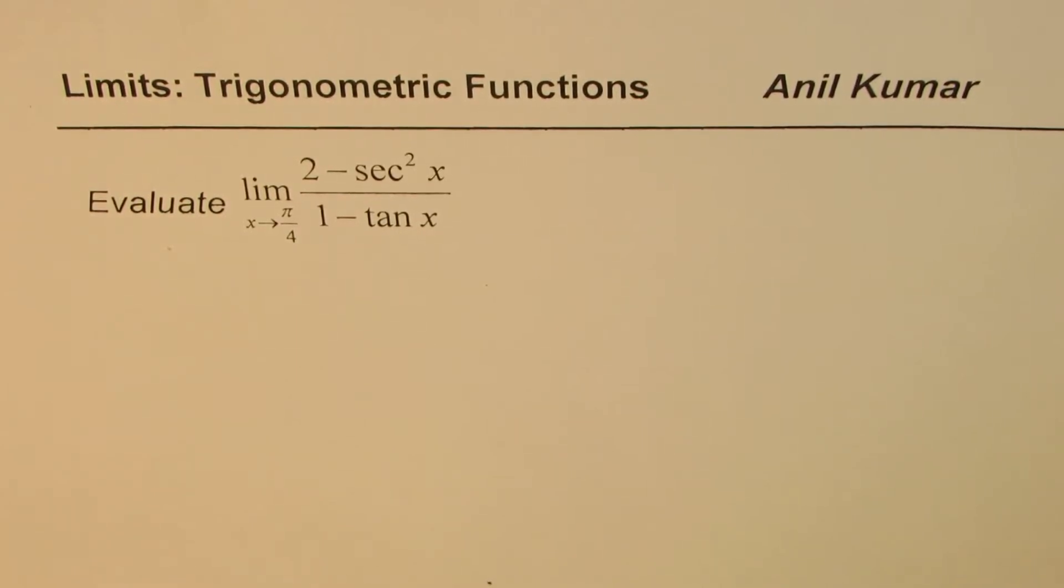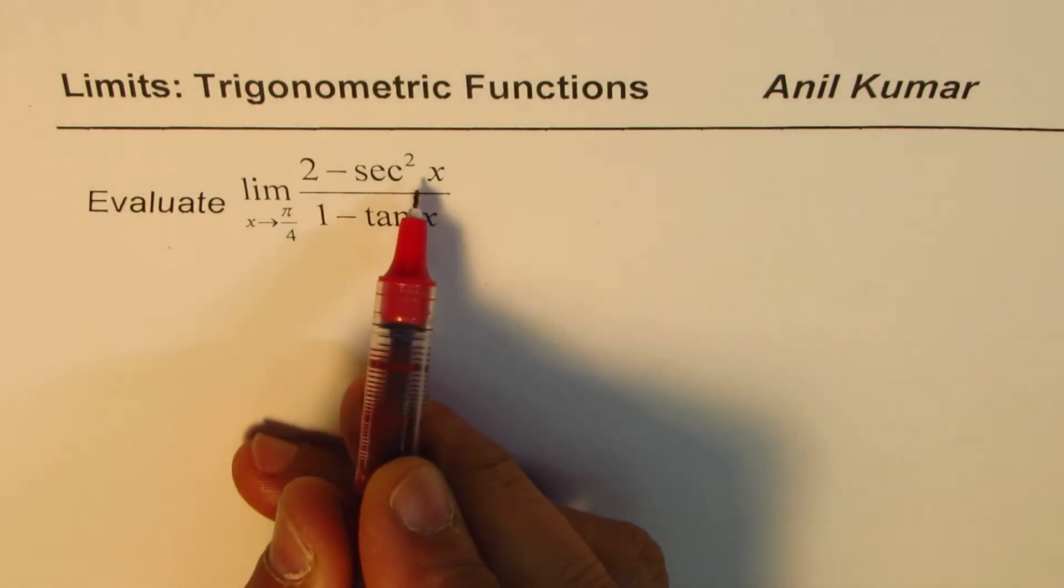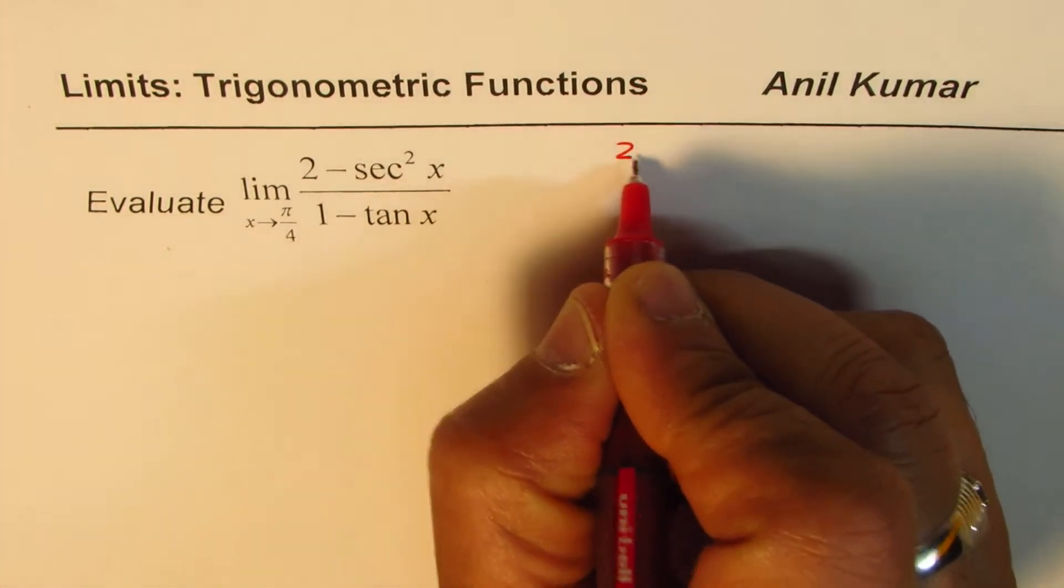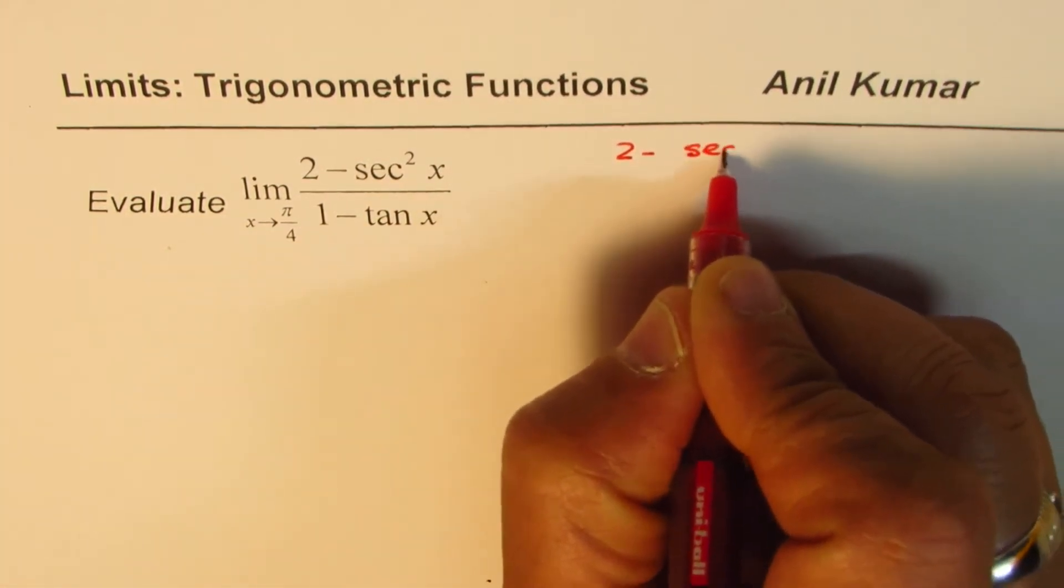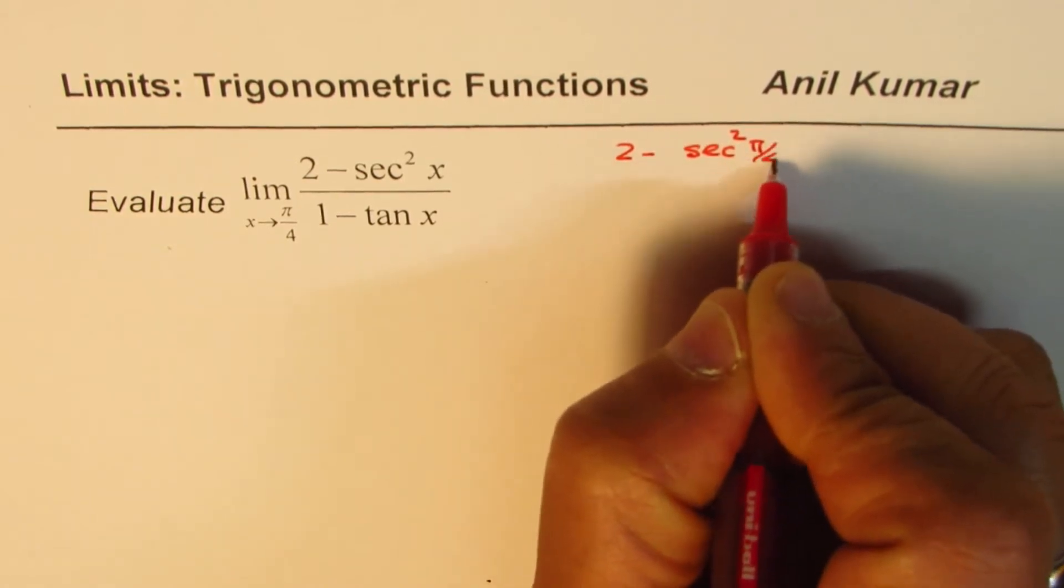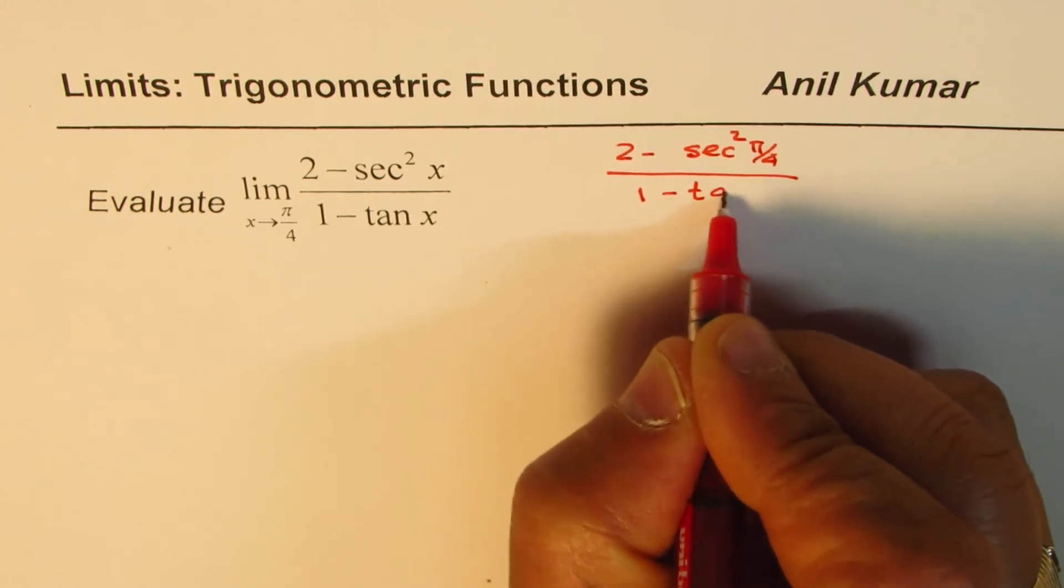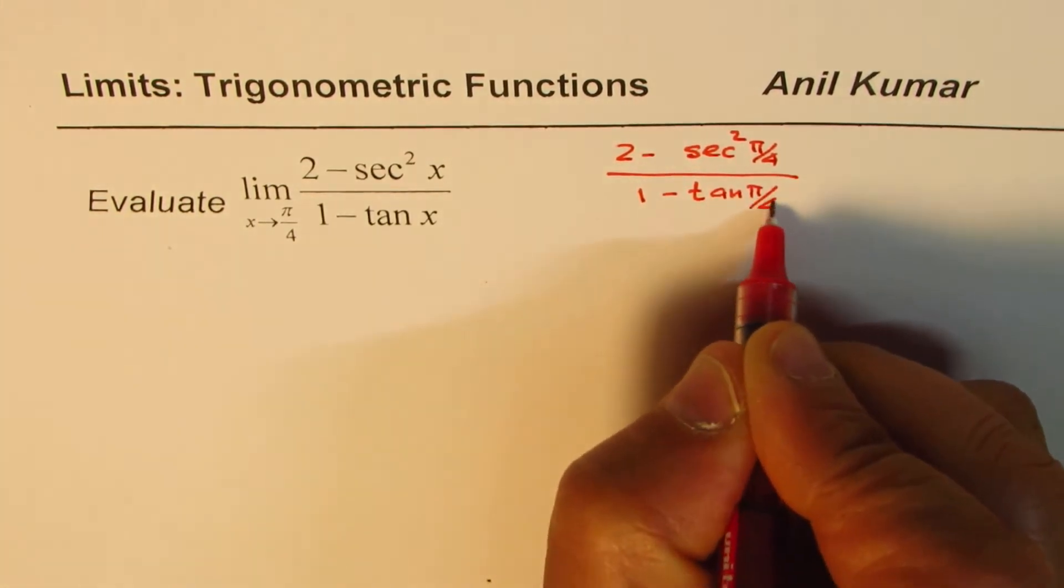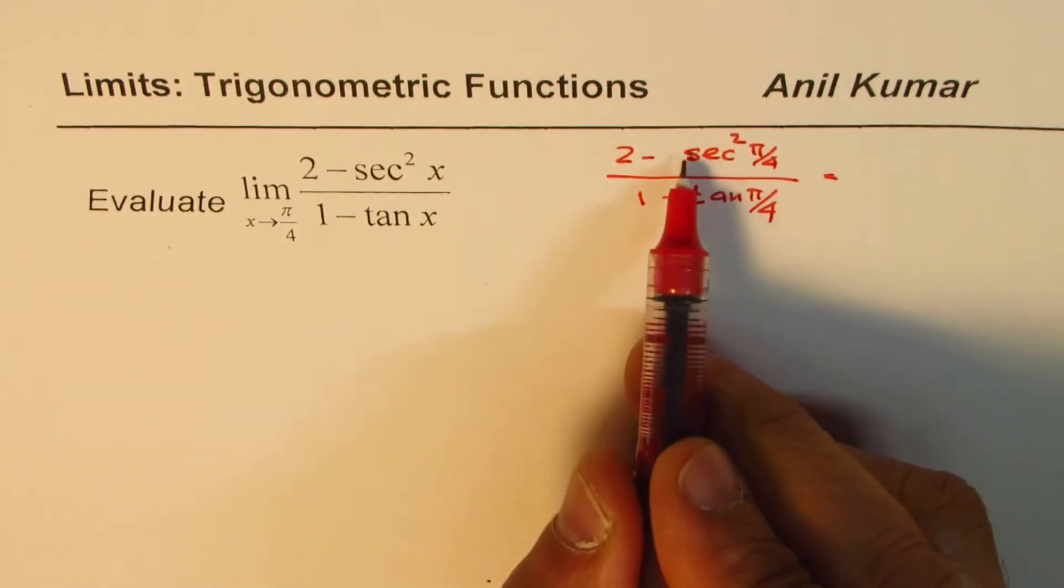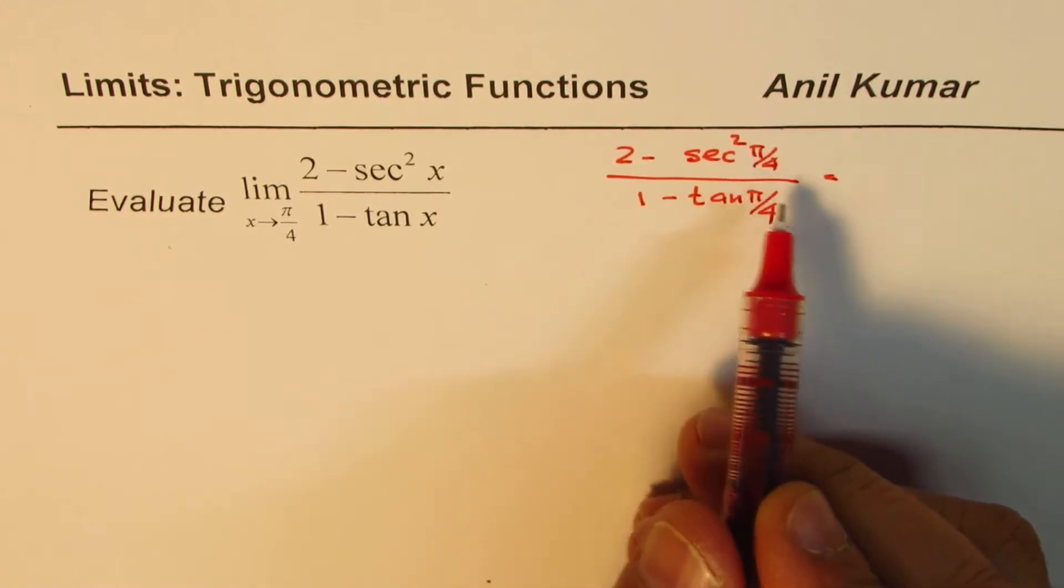You can pause the video, answer the question, and then look into my suggestions. Well, if I substitute π/4 here, I get (2 - sec²(π/4)) / (1 - tan(π/4)). Now, secant is 1 over cos, correct?